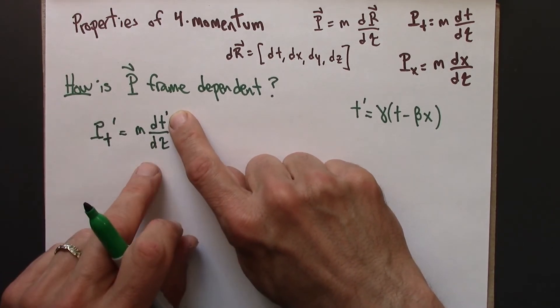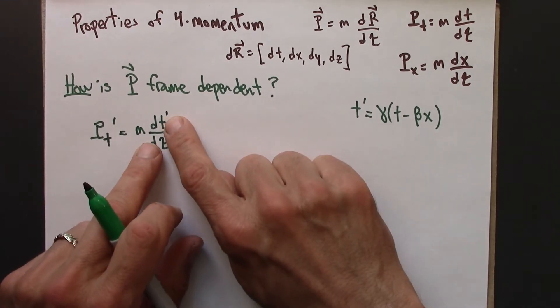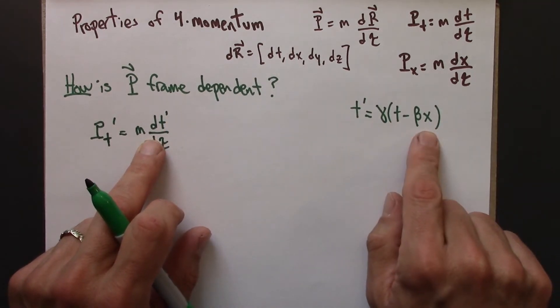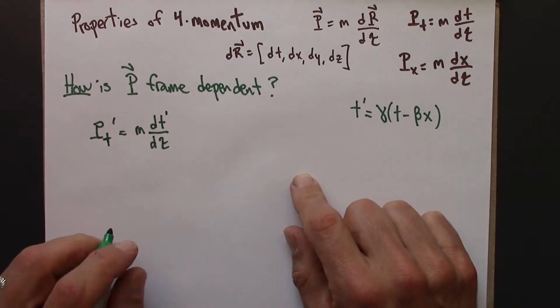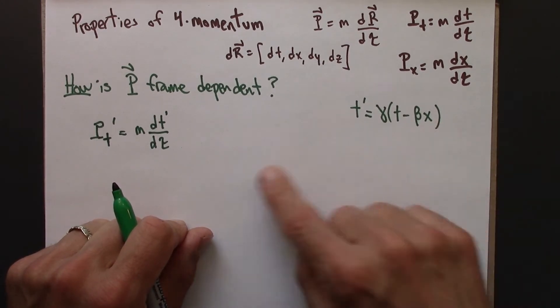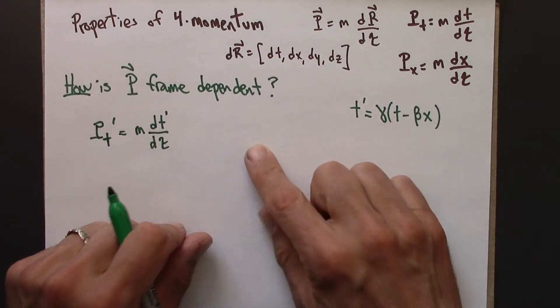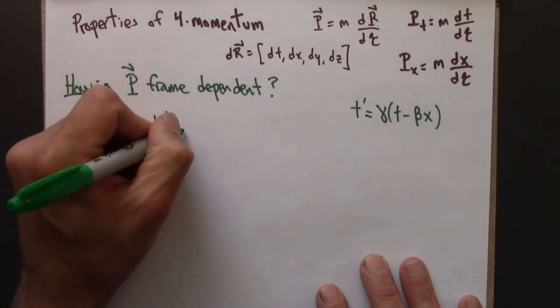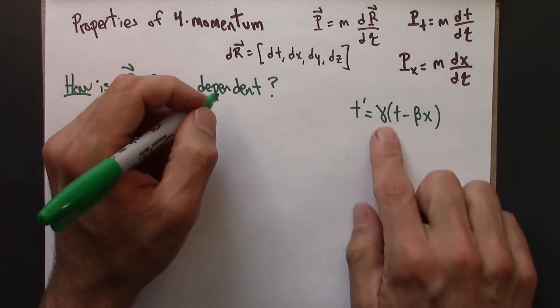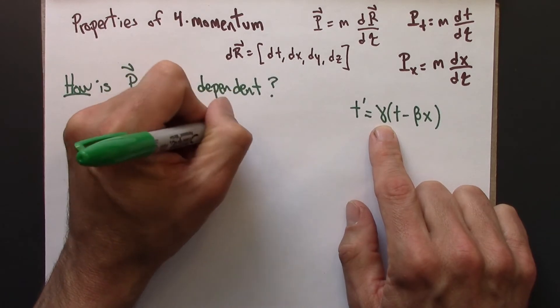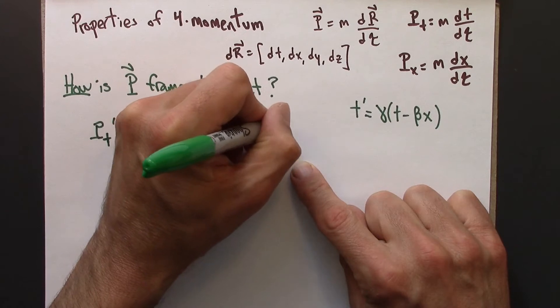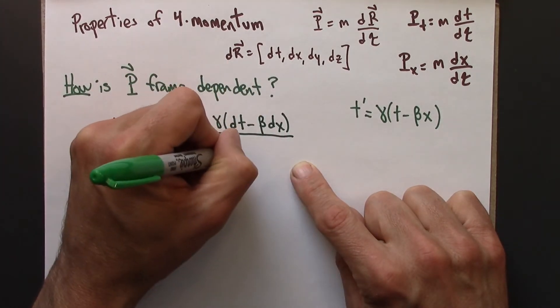So dt', what if I wanted to express that in terms of t and x? Well, I have this here. The Lorentz transformation tells me how to do that. And here I'll be doing it not with necessarily absolute x and t, but with dx and dt intervals. So let's just apply the Lorentz transformation and see what happens. So instead of dt', I'm going to have gamma dt minus beta dx, and this is all over d tau.